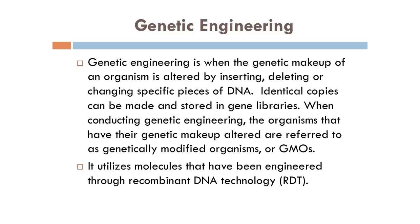Next we come to genetic engineering. Genetic engineering is when the genetic makeup of an organism is altered by inserting, deleting or changing specific pieces of DNA. Identical copies can be made and stored in gene libraries. The organisms that have their genetic material altered are referred to as genetically modified organisms or GMOs. It utilizes molecules that have been engineered through recombinant DNA technology. Basically in genetic engineering we are manipulating the genetic makeup of an organism — we can add, delete or completely remove a sequence and add a new one, using the tool of recombinant DNA technology.